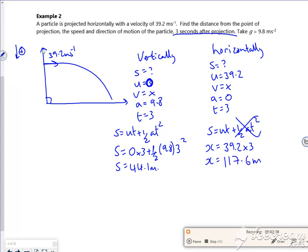So then that's my position. So I've moved horizontally 117.6 meters. Now this 44.1 in the positive means I've dropped down 44.1. So it's not 44.1 high, it's dropped down 44.1.